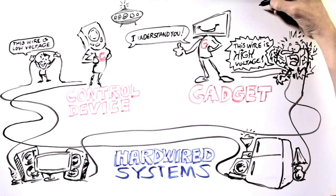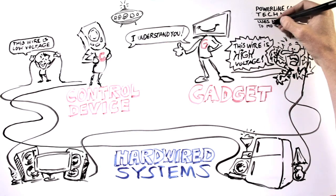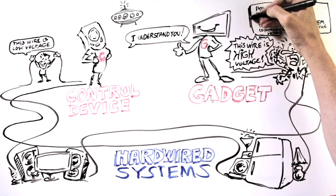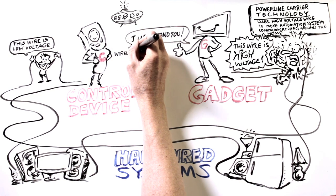Some home automation systems offer power line carrier technology, which uses high voltage wire to move automation system communications around the home. This can be a cost-effective way to provide automation since the communication infrastructure is already in place.